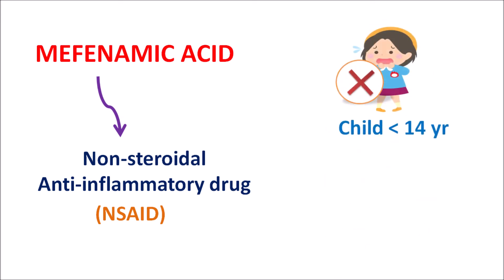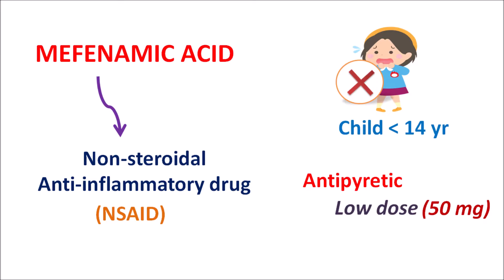Mefenamic acid should not be used in children less than 14 years. This drug is only indicated in adults and adolescents with age greater than 14 years, as safety is not completely established in children. However, mefenamic acid is available as an antipyretic agent at a low dose of around 50 mg as an oral suspension to control fever in children, but as an analgesic it is not recommended in children less than 14 years.